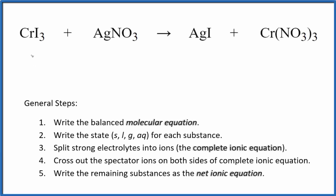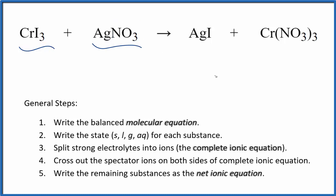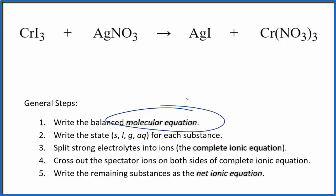Let's write the balanced net ionic equation for CrI₃ plus AgNO₃. This is chromium-3 iodide and this is silver nitrate. The first thing we need to do when we balance net ionic equations is balance the molecular equation. This is our molecular equation.